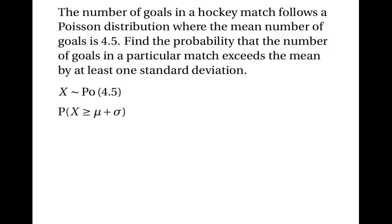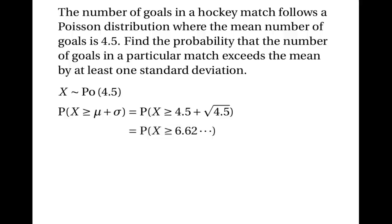The question is asking us for the probability that x is greater than or equal to mu plus sigma. Well, mu is 4.5 and sigma is the square root of 4.5, so this is actually asking us for the probability that x is greater than or equal to 4.5 plus the square root of 4.5, which is approximately 6.62. Since x can only be a whole number, this is the same as the probability that x is greater than or equal to 7.